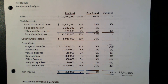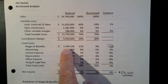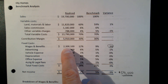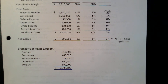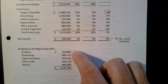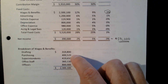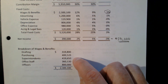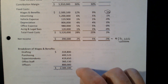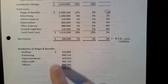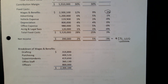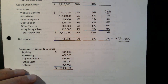So we dig down a little bit deeper and ask: what is this $2,300,100 comprised of? I can look at drafting wages, purchasing, superintendents, office staff, and the officers of the company — that's how it is made up. So I'm going to dig down into this deeper to see where a problem might exist.